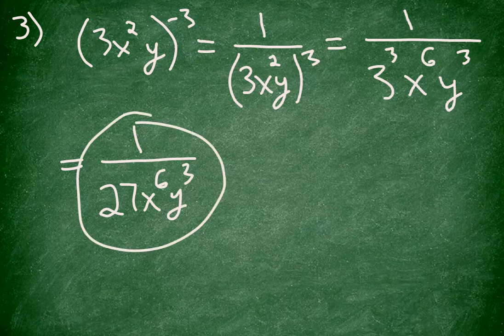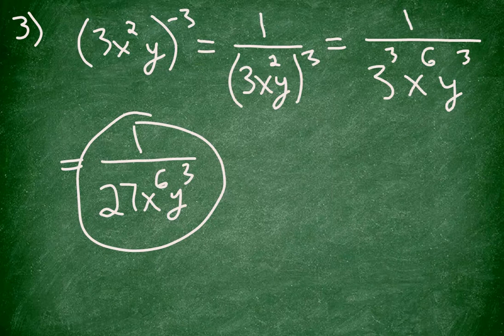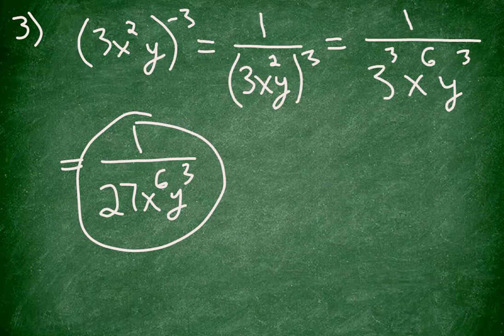So we've gone through multiplying like bases, dividing like bases, negative exponent law, and power to a power law. There are a couple other ones you want to keep in mind. For example, anything raised to the power of zero — except zero itself — is one. So for example, 10 to the power of zero is one, x to the power of zero is one, and so on. But those are some of the more common laws that you'll see.